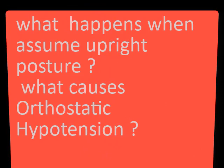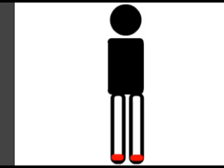Let's understand what happens when we assume upright posture and what causes orthostatic hypotension. When we assume upright posture, the effects of gravity result in a redistribution of circulating blood volume in the body, resulting in shifting of 500 to 1000 ml of blood to the lower part of the body.